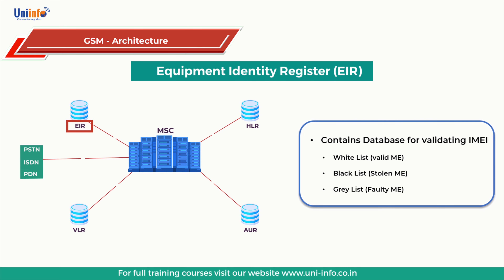Fourth component is equipment identity register (EIR). The EIR is a database that contains a list of all valid mobile equipment on the network, where each MS is identified by its international mobile equipment identity (IMEI). An IMEI is marked as invalid if it has been reported stolen or is not type approved. The EIR contains: first, a whitelist that includes IMEIs allocated to all approved MEs; second, a blacklist that includes IMEIs of faulty MEs and non-homologated MEs; third, a greylist that is for faulty ME.